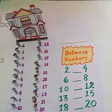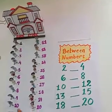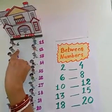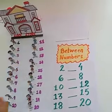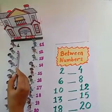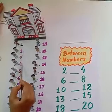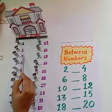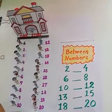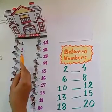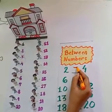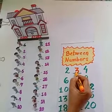Now tell me children, which number child is standing between 2 and 4? Very good — child number 3. So we will write here 3.